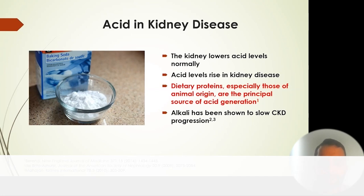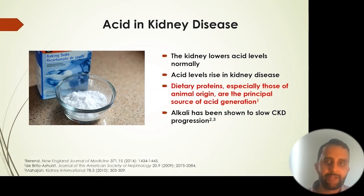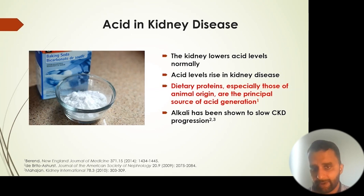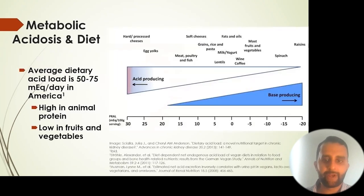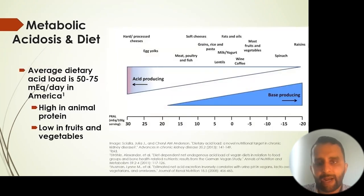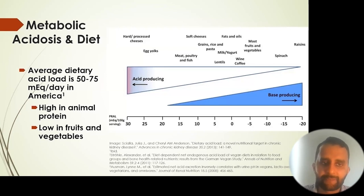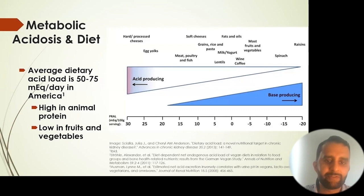Alkali is a base — it's the opposite of an acid. A very common form of alkali is baking soda, hence the photo there. This graph shows various foods and their acid or base potential. The average dietary acid load in this country is net acidic, involving 50 to 75 milliequivalents per day of acid.